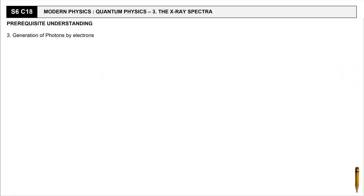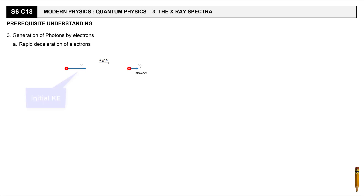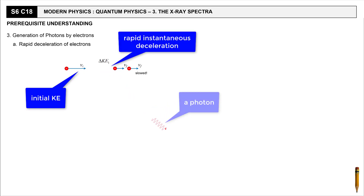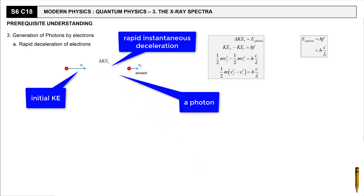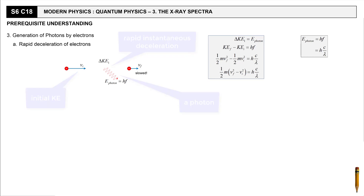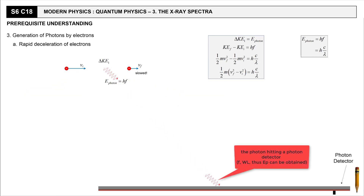Point number three: generation of photons by electrons. We will be learning two ways by which photons can be generated by electrons, both based on the principle of conservation of energy. Firstly, by deceleration of electrons. When a high-velocity electron is decelerated, that is slowed down, that loss in kinetic energy has to be converted to some other form of energy. In the case of the fast-moving electron being rapidly decelerated, it will lose its kinetic energy in the form of photon energy. The difference in kinetic energy will equal the energy of the photon, and with a photon detector we can obtain its frequency, thus wavelength.